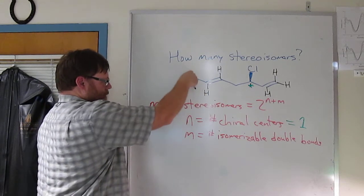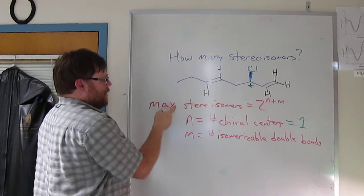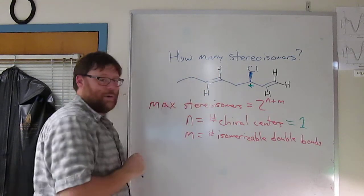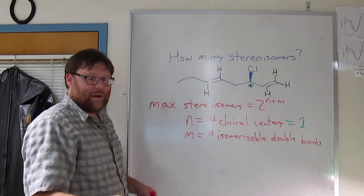Let's take the interior double bond first. You could imagine this double bond, you could replace, put the H, you could replace the H and the ethyl group, right? Switch those around. If you do that, the two H's are cis to one another. In this double bond, the two H's are trans to one another. That's a cis-trans relationship. That is an isomerizable double bond.